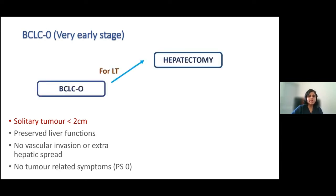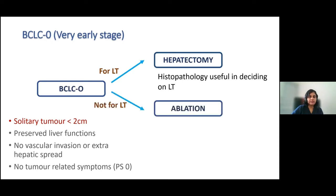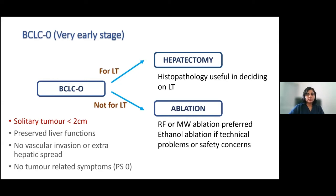If the patient is a candidate for liver transplant, hepatectomy is the ideal solution, as availability of histopathology is important. If microvascular invasion is found in the hepatectomy specimen, that will lead towards liver transplantation. If the patient is not for liver transplant, then ablation is the option — it is a cheaper and relatively non-invasive alternative. Radiofrequency ablation or microwave ablation are preferred; ethanol ablation is only used if RFA or MWA is technically not possible.